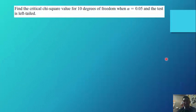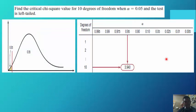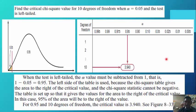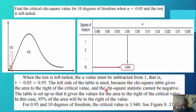Another example — find the critical chi-square for 10 degrees of freedom when alpha is 0.05 and the test is left-tailed. For a left-tailed test, the alpha value must be subtracted from 1: 1 minus 0.05 equals 0.95. The chi-square table gives the area to the right of the critical value, and the chi-square statistic cannot be negative. For 0.95 and 10 degrees of freedom, the critical value is 3.940.